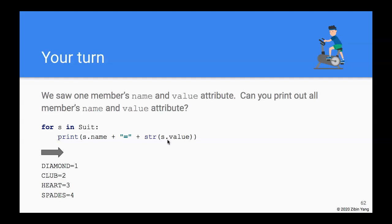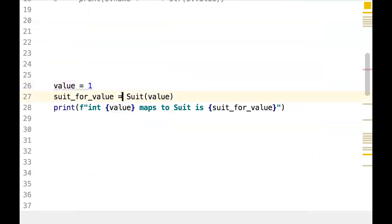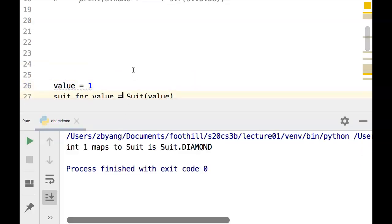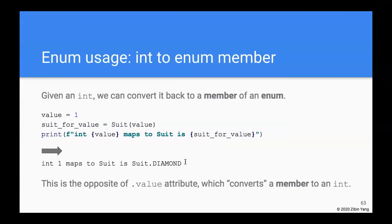We see that we can get an integer representation of an enum member by using the .value attribute. Now we can do it the other way around - from an integer value such as 1, we can convert it back to a member of the enum. For 1, we would expect using the syntax Suit(1) to get diamond back. So let's see if we actually get that. There - the integer 1 maps back to the suit diamond, so that's good.